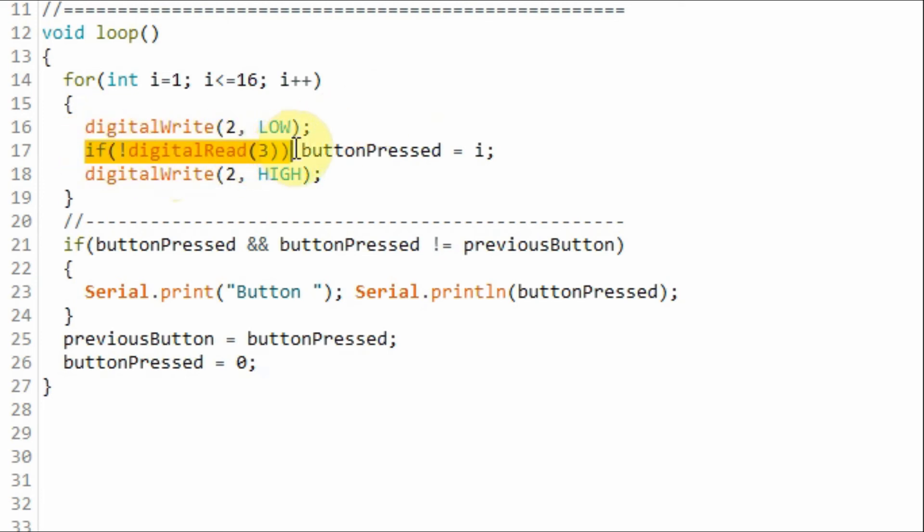And then we check the serial data output line for logic 0. If we have logic 0, then a button has been pressed, then we store the position of that button. And then we send a logic high through the serial clock line so that we are ready for the next key press scan.